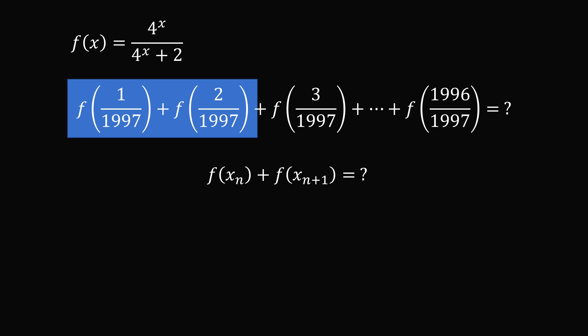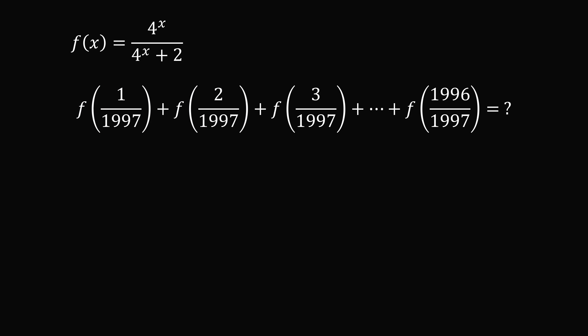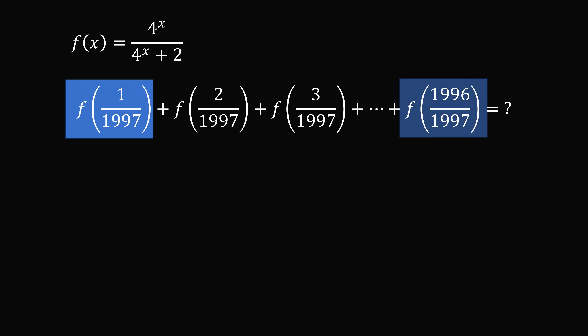I was not able to, so you try this approach and then start over. Another approach is to pair terms — imagine pairing the first term with the last term, then the second term with the second to last term, and so on. So 1 over 1997 and 1996 over 1997 sum to 1, and we're looking for a pattern in f of x plus f of 1 minus x.